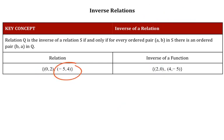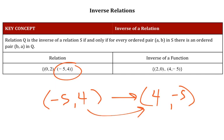Checking the next one, negative 5, 4. The negative 5 becomes the y. And the 4, which was the y, becomes the x. So they've switched locations.